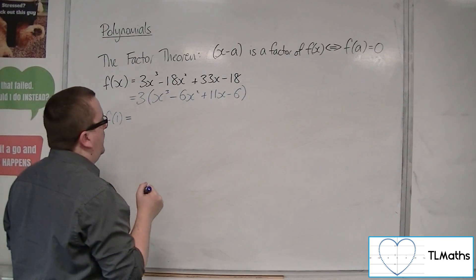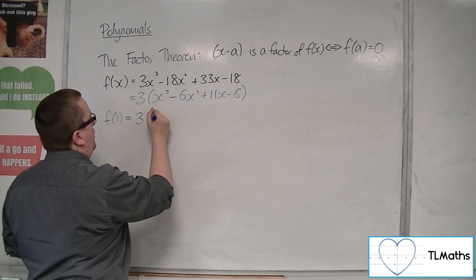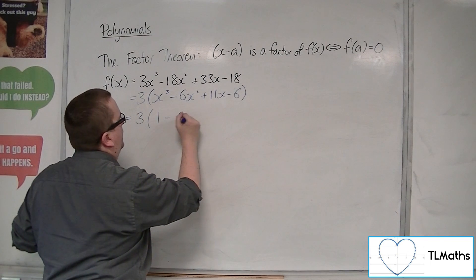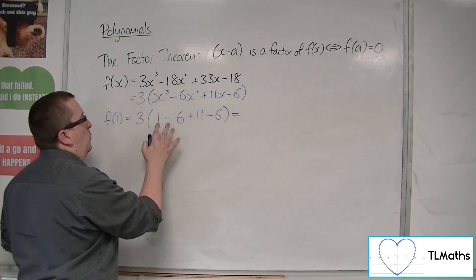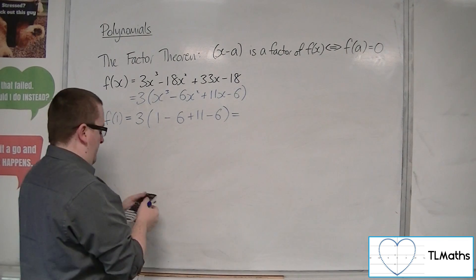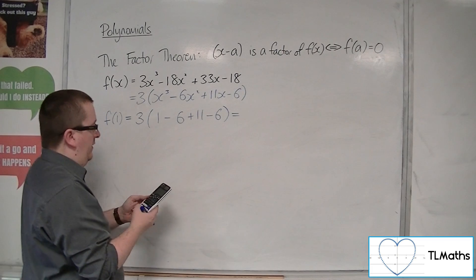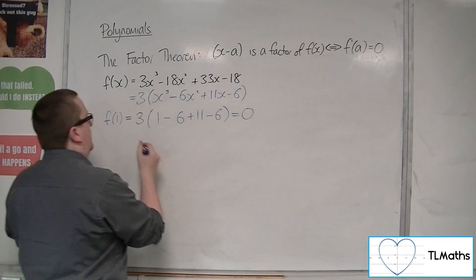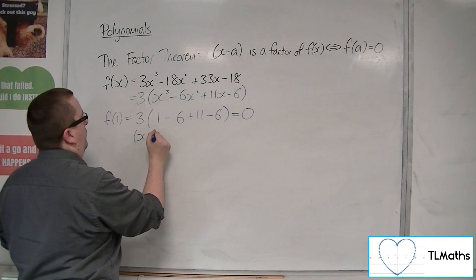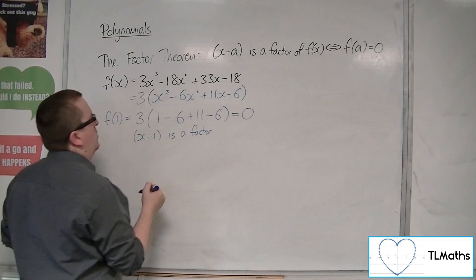So f of 1, substituting 1 in, I'm going to get 3 lots of 1 take away 6 plus 11 take away 6. So 1 take away 6 is minus 5. I'll just pop it into the calculator. 1 take away 6 plus 11 take away 6 is 0. So that's 0. So 3 lots of 0 is 0. So therefore, x minus 1 is a factor. Brilliant.